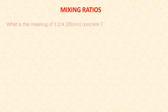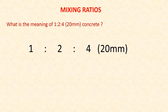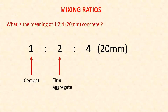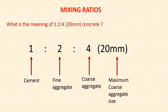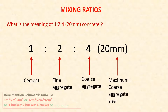What is the meaning of 1:2:4 20mm concrete? The answer is: one portion cement, two portions fine aggregate, four portions coarse aggregate. 20mm means the maximum size of coarse aggregate is 20mm. These are all volumetric ratios — for example, one bucket, two buckets, four buckets.